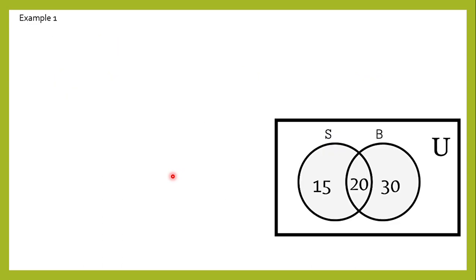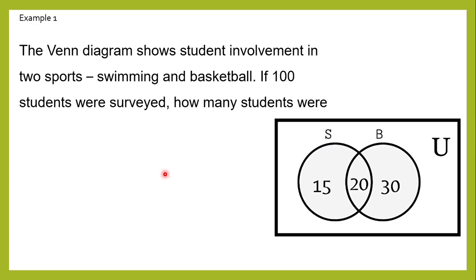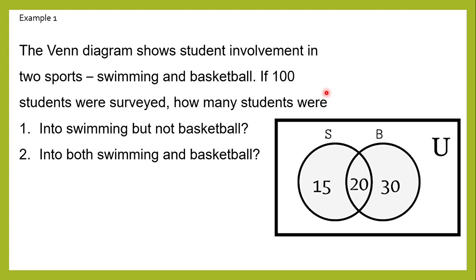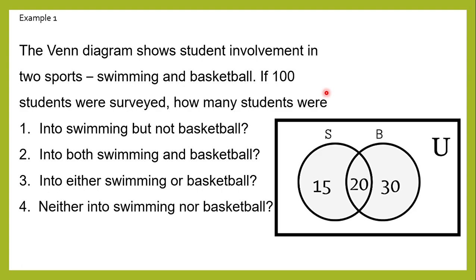Let's now have our first example. The Venn Diagram shows student involvement in two sports, namely swimming and basketball. If 100 students were surveyed, how many students were: first, into swimming but not basketball; into both swimming and basketball; into either swimming or basketball; and lastly, neither into swimming nor basketball?